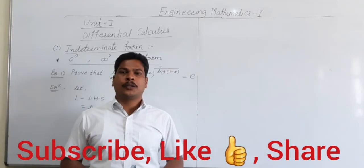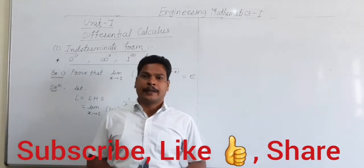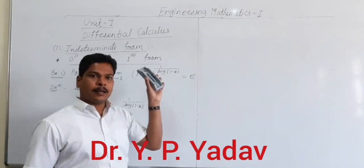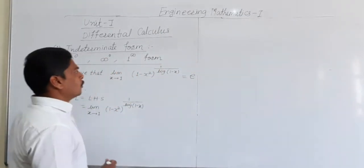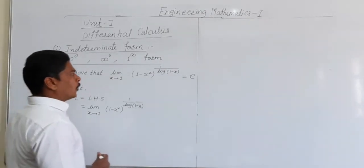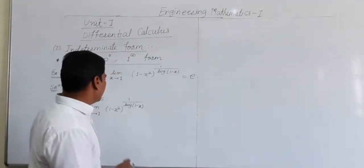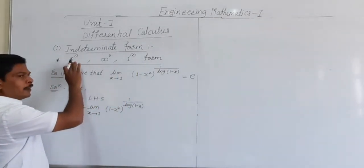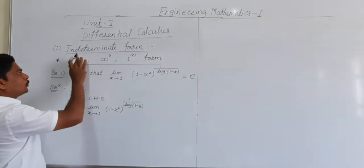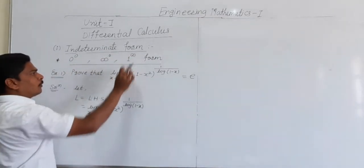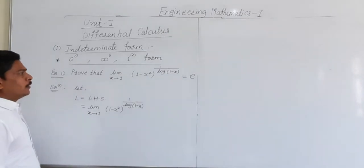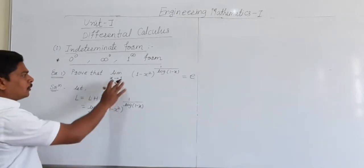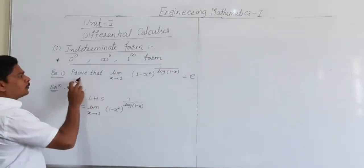Welcome. This is our third lecture on Unit 1, in which we are discussing indeterminate forms. For indeterminate forms, formulas of derivatives are very important. Our next case is if our indeterminate form is of the form 0 raised to 0, or infinity raised to 0, or 1 raised to infinity. In this case, we take the log of our limit function.